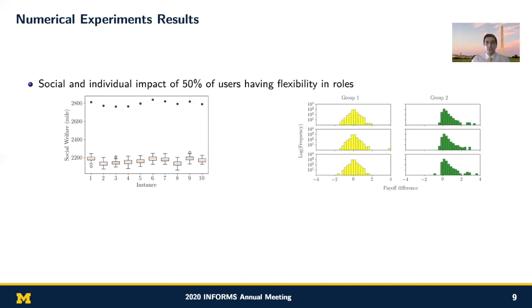All right. Finally, I want to talk a little bit about our numerical experiments where we applied our methodology to a portion of New York City Taxi dataset, where here I talk about a few important results. First, I want to talk about the impact of considering role flexibility in a ride-sharing market. For this, we compared a system in which 50% of the users have role flexibility with 100 random two-sided market equivalents of them. I mean, a system in which all users have already specified their roles.